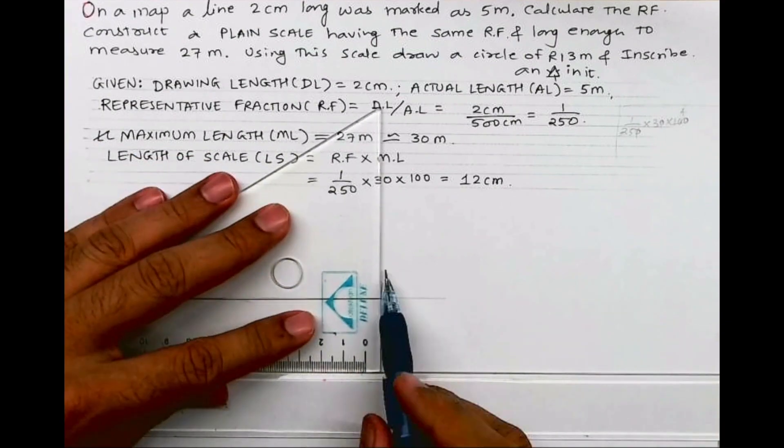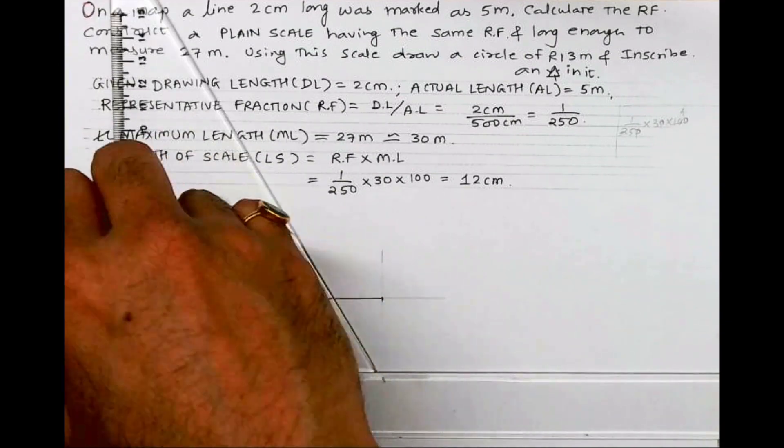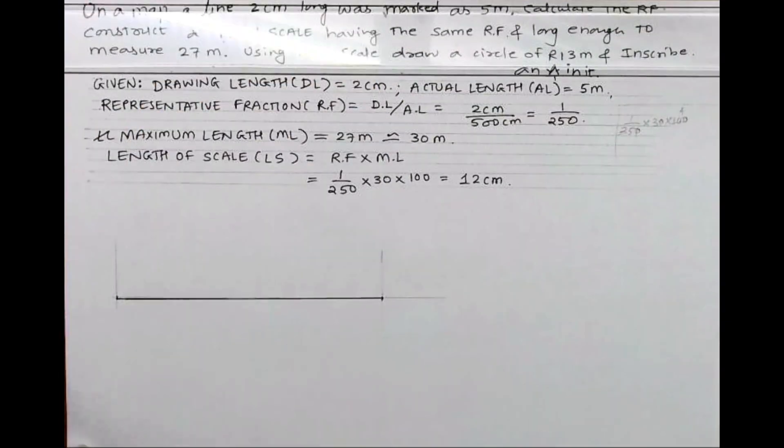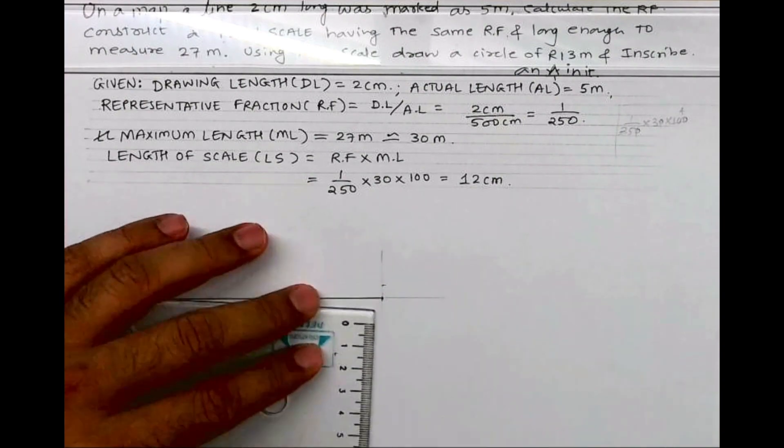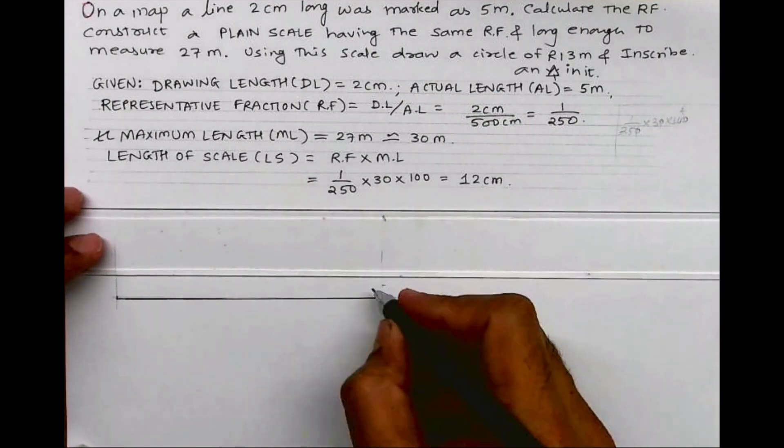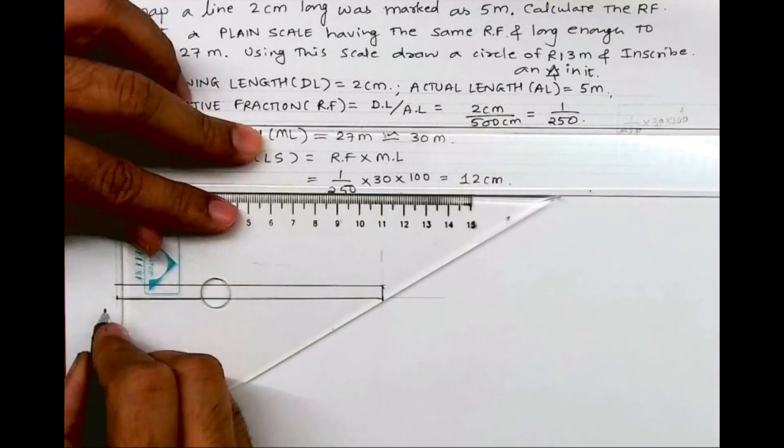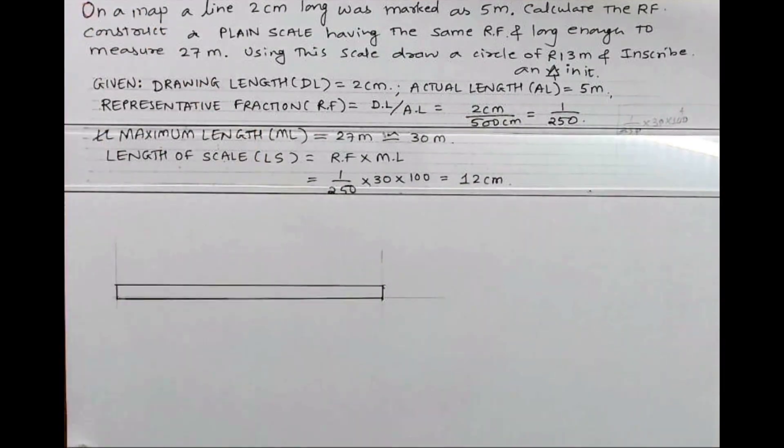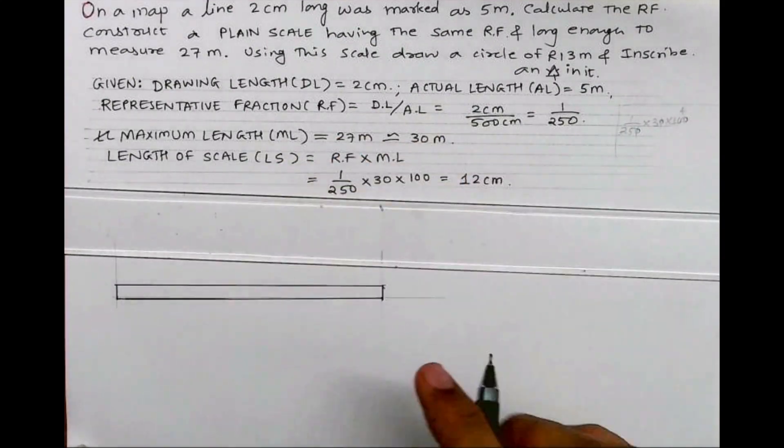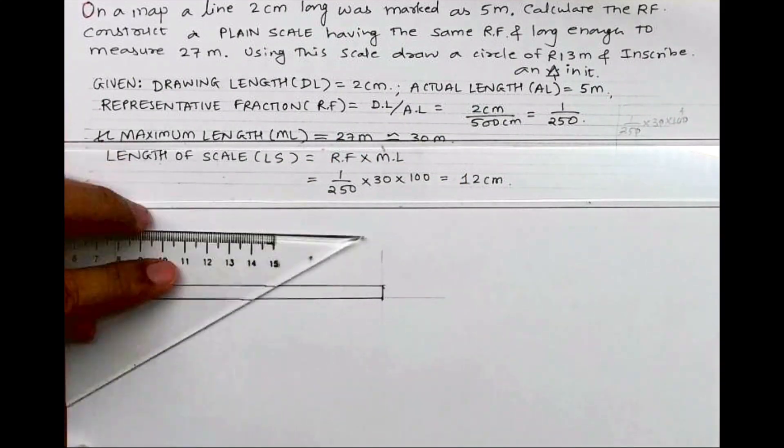I will take height 5 mm. You can take whatever you want. So this rectangle we got 12 cm by 5 mm. Now this is 30 m long. We need to divide into 3 parts because we need to mark 30 m on it.